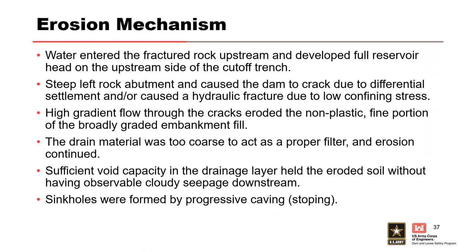Here's a summary of the erosion mechanism that occurred. Water entered the fractured rock upstream and developed full reservoir head on the upstream side of the cutoff trench. The steep left abutment rock caused the dam to crack due to differential settlement and/or hydraulic fracture due to low confining stress. A high gradient flow through the cracks eroded the non-plastic fine portion of the broadly graded embankment fill, and the drain material was too coarse to act as a proper filter and allowed erosion to continue. Sufficient void capacity in the drainage layer held the eroded soil without observable cloudy seepage downstream, and sinkholes were formed by progressive caving or stoping.